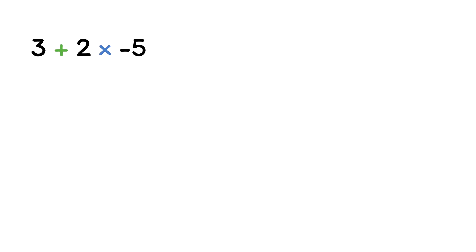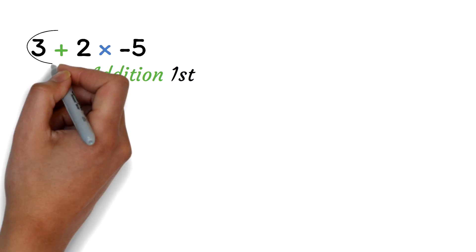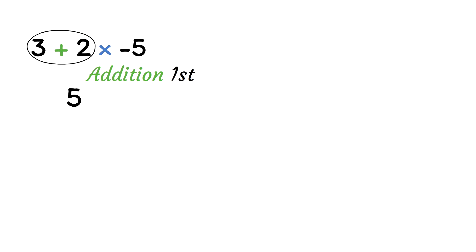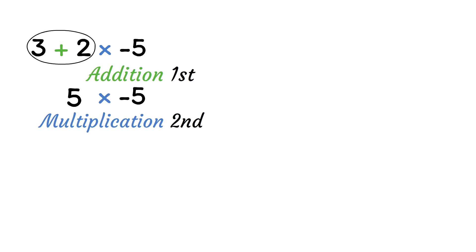Let's say you have 3 plus 2 times negative 5. To simplify this, let's start with the addition operation first. So we'll add the 3 and 2 to get 5. Then we will do the multiplication operation, so 5 times negative 5 is negative 25. Now this looks like you did all things the right way, but this answer is wrong.